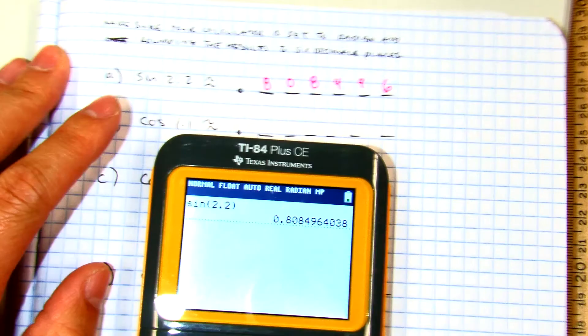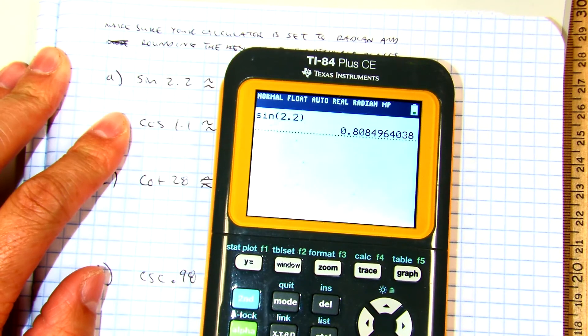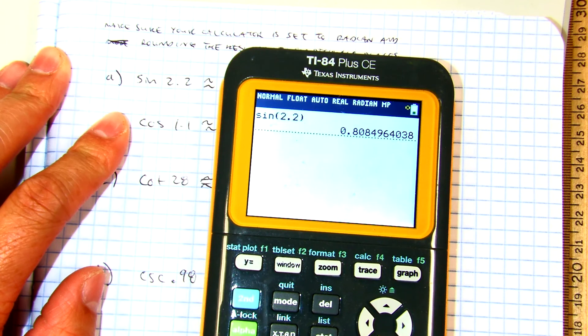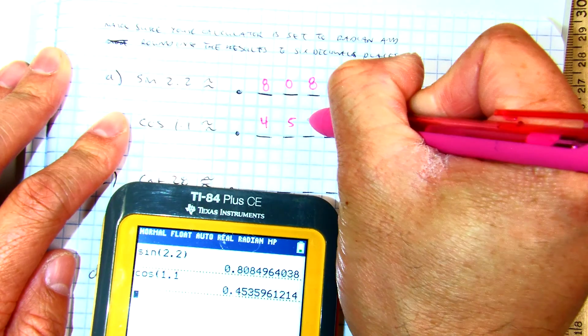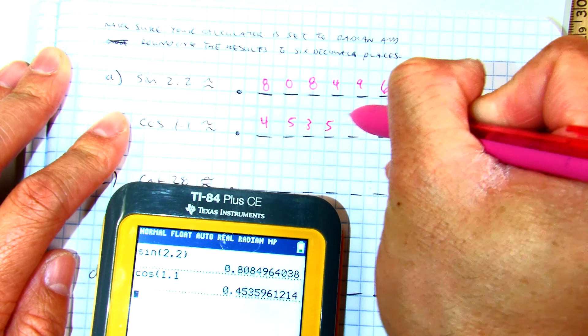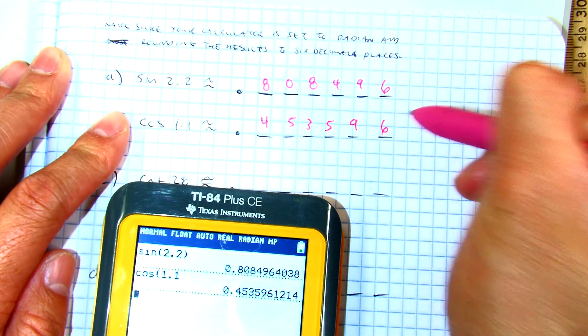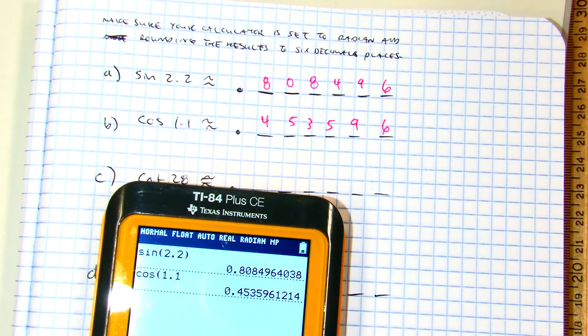Let's type in cosine. I'm going to get four, five, three, five, nine, six. Raise your hand if you got that one. Good.